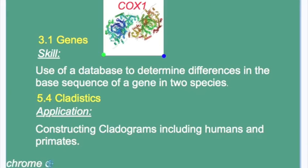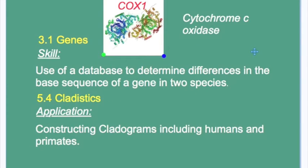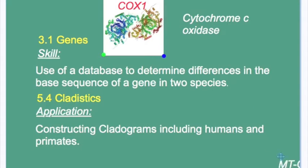The COX-1 gene codes for the protein cytochrome C oxidase, which is found in the mitochondrion. In humans, the same gene is referred to as MTCO1.